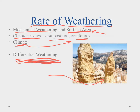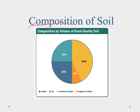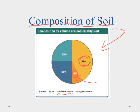Now we're looking at the composition of soil. In a good quality soil sample, the largest component is 45% mineral matter — primarily broken-down rocks in the form of clays, silts, and sands, very small sediments. We also have 5% organic matter, primarily the decaying and decomposing remains of plants and some animals, along with microorganisms that play an important role. We also need about 25% water.